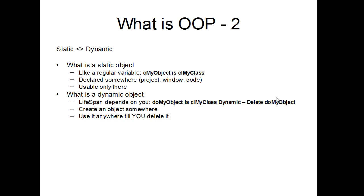The good thing is that you can create many, many objects, manage them, delete them, and do lots of wonderful things. So there is a reason why you will want to use dynamic objects. Because of all that, there is no such thing as a local dynamic object. Even if you declare a dynamic object — doMyObject is ClMyClass dynamic — in a section of code where you put the local keyword before, it won't change a thing. The name will be local, but the object itself will not. It is dynamic, therefore you have to delete it.